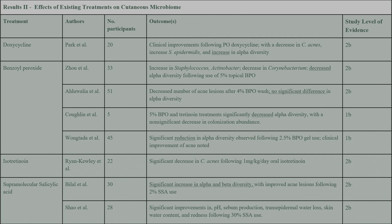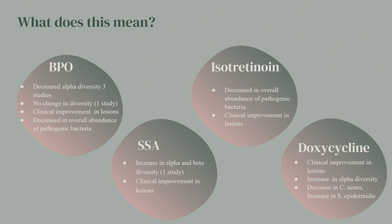The second set of results looks at the effects of existing treatments on the cutaneous microbiome: oral doxycycline, benzoyl peroxide, isotretinoin, and supramolecular salicylic acid. All of these studies resulted in clinical improvements in acne lesions and some shift in the microbiome in terms of general prevalence of certain bugs. Interestingly, they all had different effects on alpha diversity: doxycycline showed an increase in alpha diversity with improvement in lesions; benzoyl peroxide decreased alpha diversity even though lesions improved; isotretinoin did not comment on diversity; and supramolecular salicylic acid showed an increase in both alpha and beta diversity. The effects on alpha diversities were somewhat mixed.